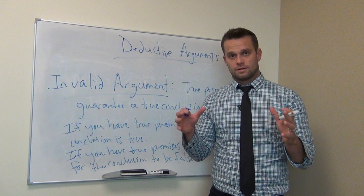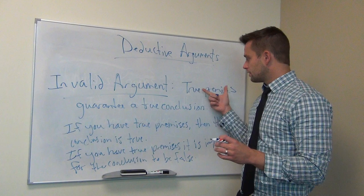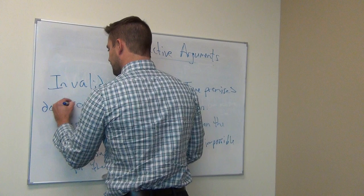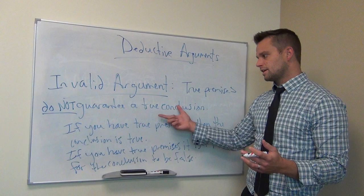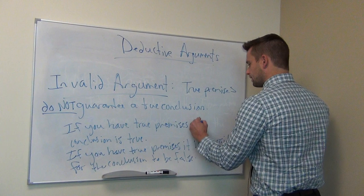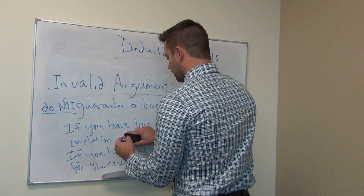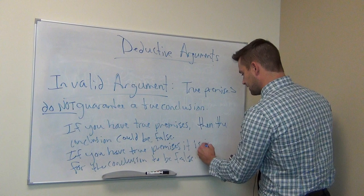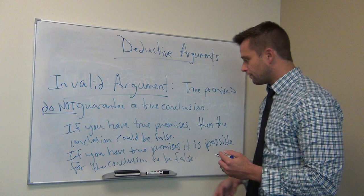An invalid argument — remember, validity only deals with form, not true or false, although truth and falsity are used to define it. In an invalid argument, true premises do not guarantee a true conclusion. Another way to say it: if you have true premises in an invalid argument, then the conclusion is not necessarily true — or the conclusion could be false. If you have true premises, it is possible for the conclusion to be false.